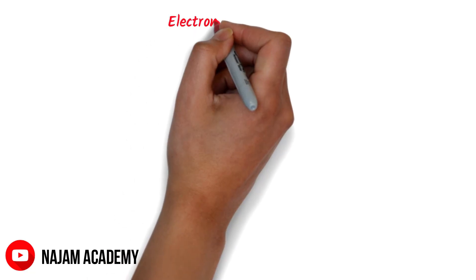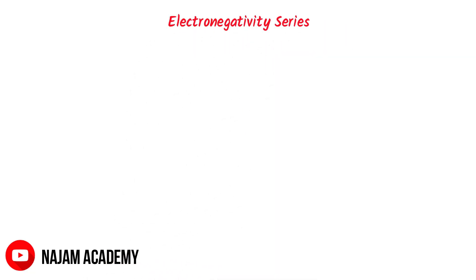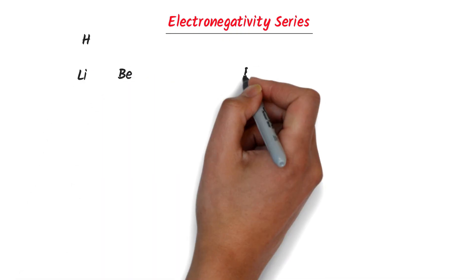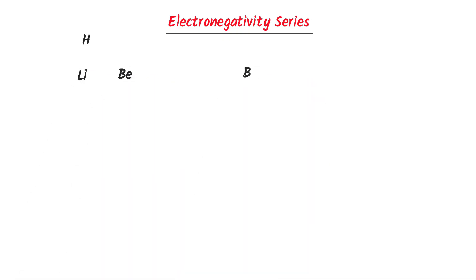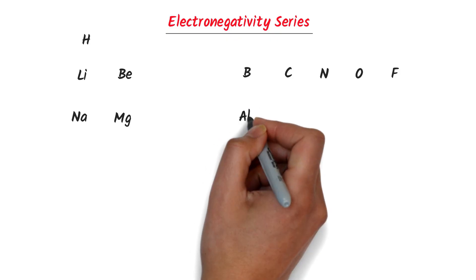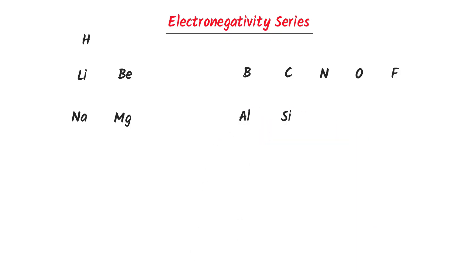Now, what about the electronegativity series in the periodic table? I write the second period elements: hydrogen, lithium, beryllium, boron, carbon, nitrogen, oxygen, fluorine. For the third period: sodium, magnesium, aluminium, silicon, phosphorus, sulfur, and chlorine.